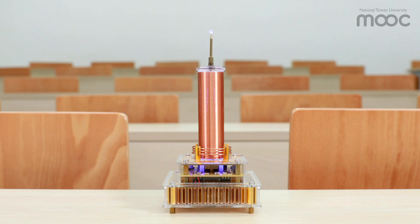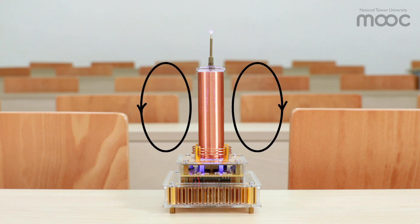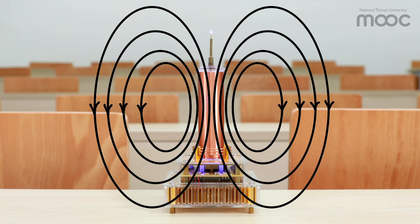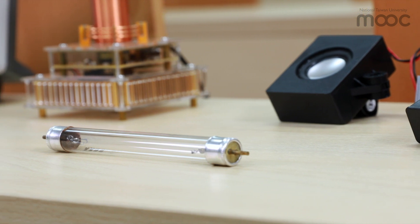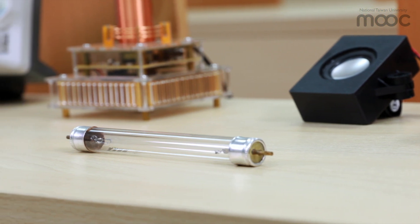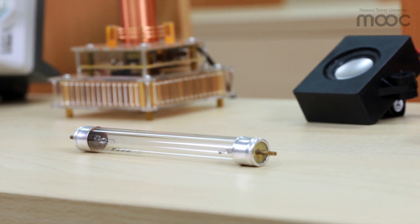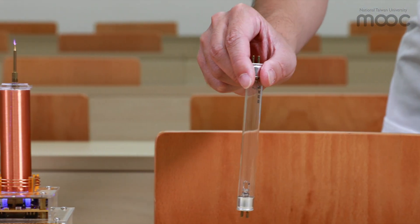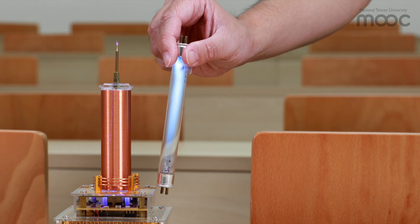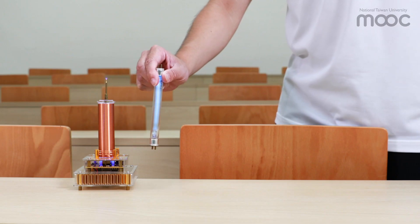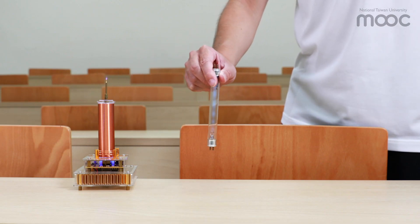Besides the bright plasma, electromagnetic fields are radiated into the air and we can try to receive this radio frequency energy. For example, we can use a fluorescent light tube to demonstrate this effect. Radio waves excite the gases inside the tube, which emit UV rays onto the phosphor layer, so visible light can be seen.